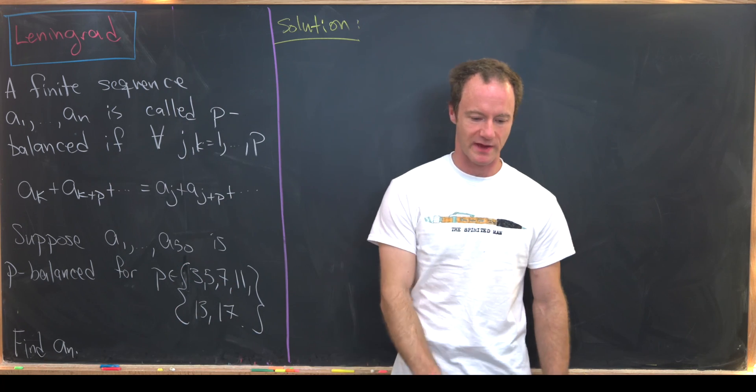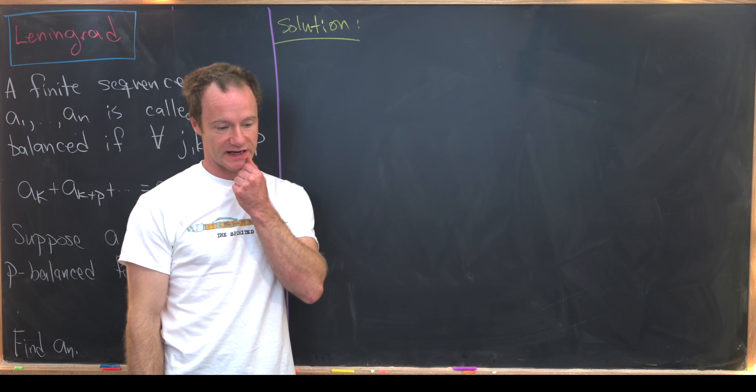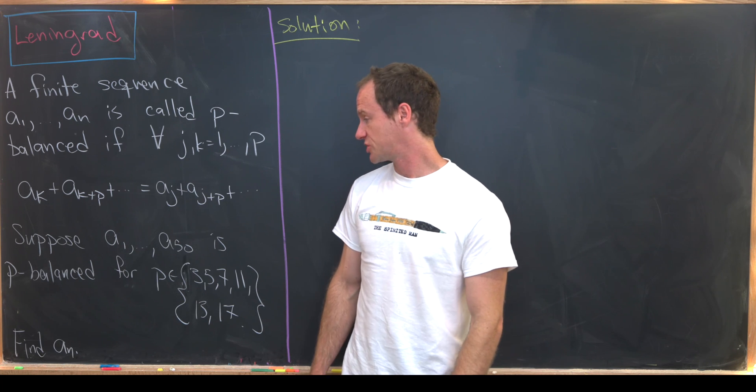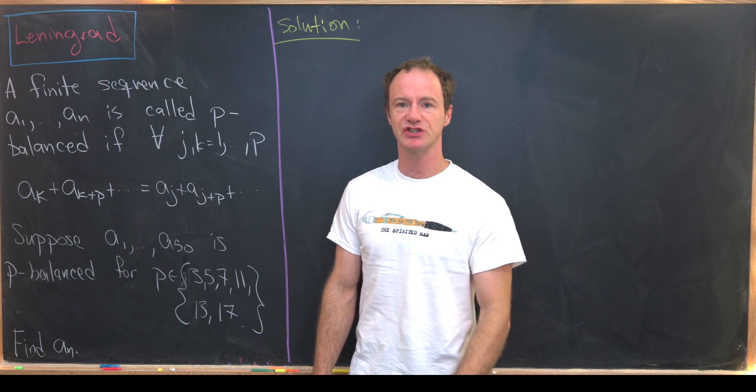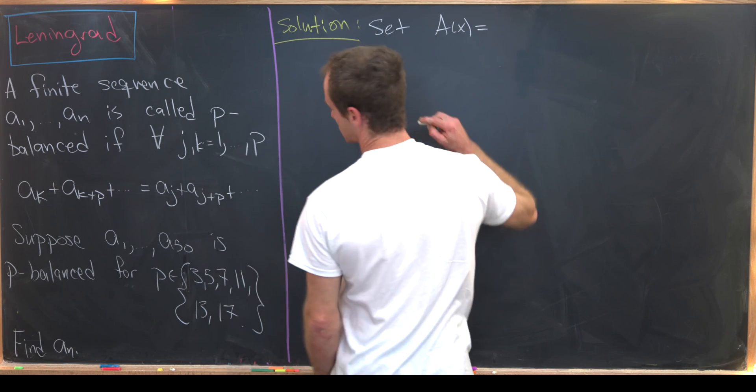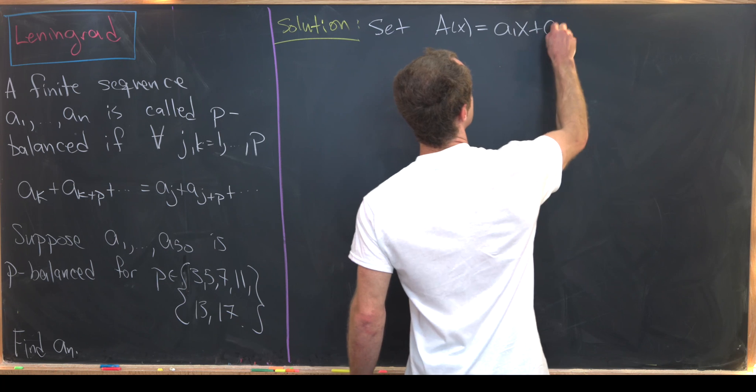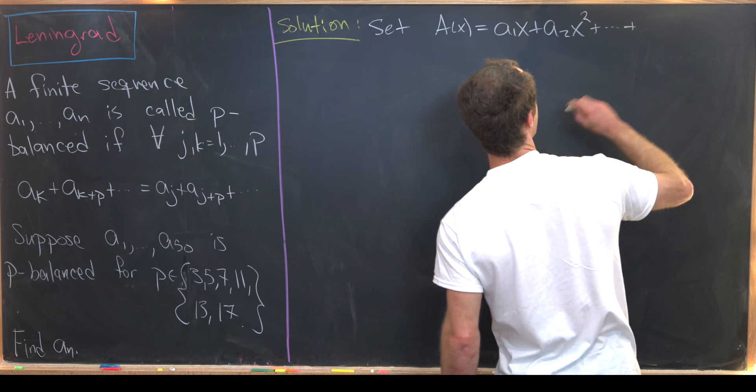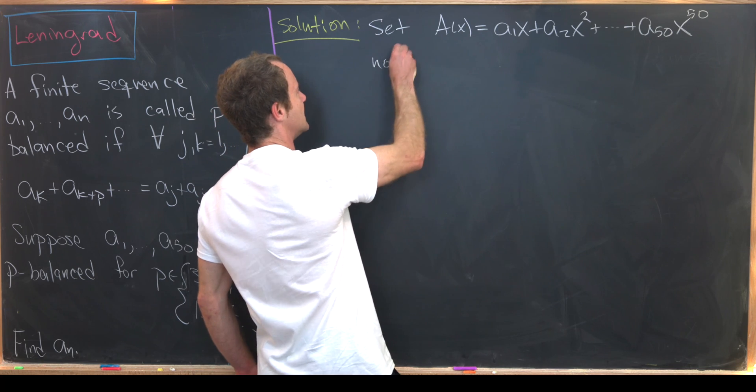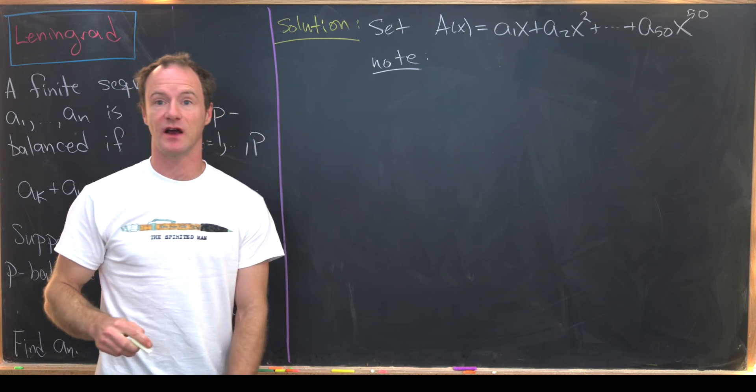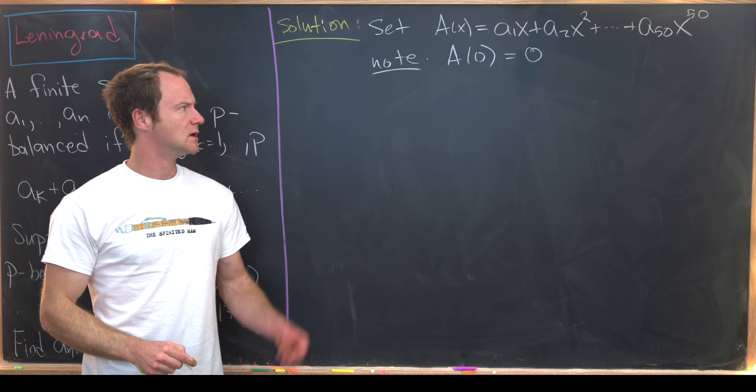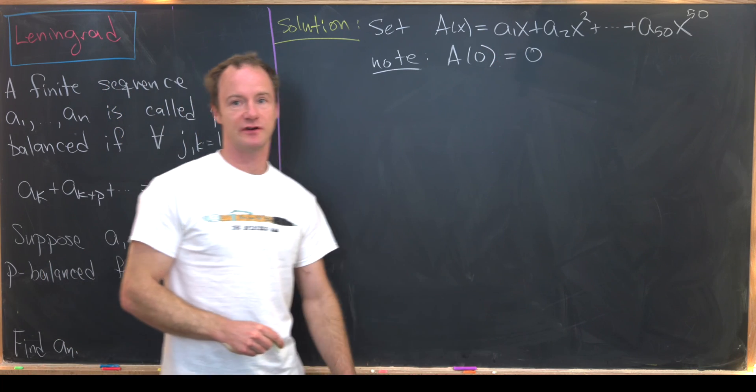Okay we just got done stating the problem and looking at an example. Now we're ready to look at a careful solution. I'm going to use one of my favorite techniques and that is the technique of generating functions. But since we've got a finite sequence here it's really just a generating polynomial. So let's set A(x) equal to the polynomial a1x plus a2x squared plus all the way up to a50x to the 50. Before we even get started I want to make the following obvious observation: A evaluated at 0 equals 0. Notice we've got a factor of x everywhere.